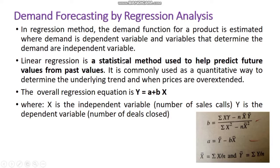By using past sales data, we estimate using a statistical method. It is commonly used as a quantitative way to determine the underlying trend. This belongs to quantitative demand forecasting. We take past sales and work out future demand using the overall regression equation: y = a + bx.